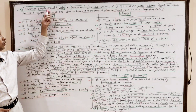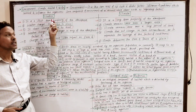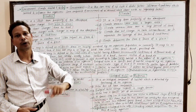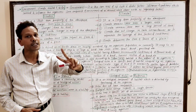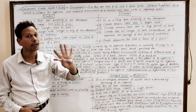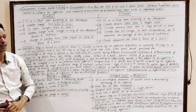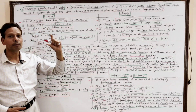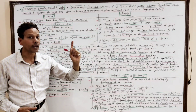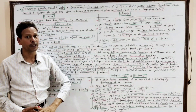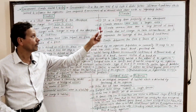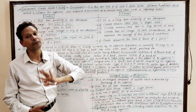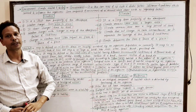Two very important terms: weather and climate. Note down the differences between weather and climate. Weather is a short-term property of the atmosphere, while climate is a long-term property of the atmosphere.